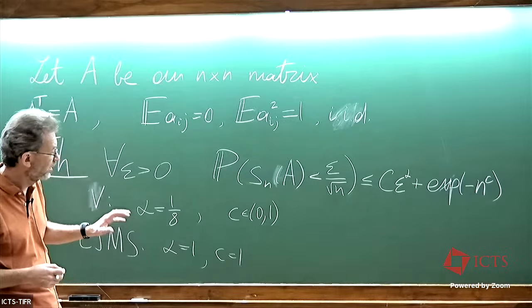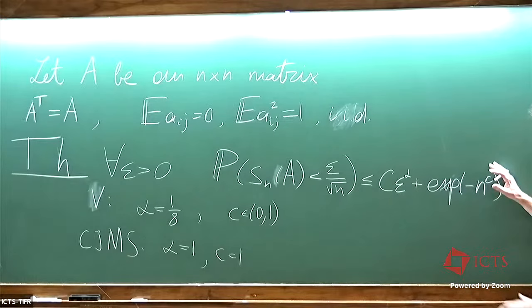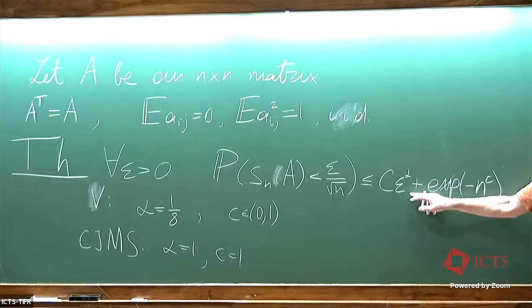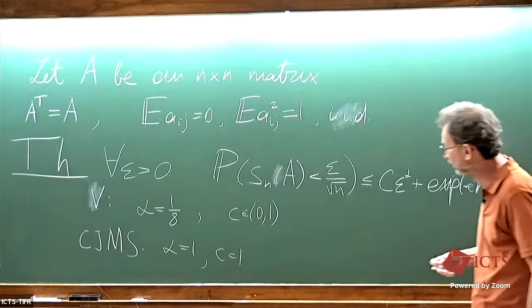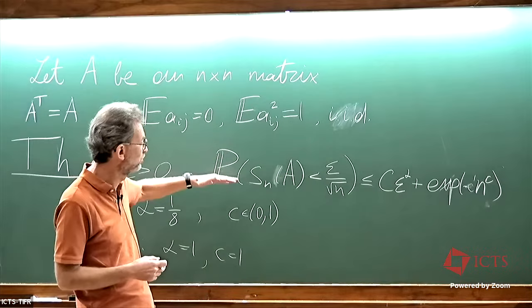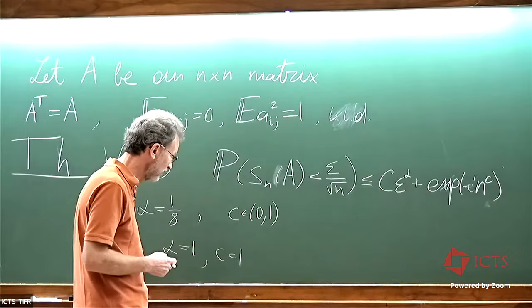This is also optimal. If we ignore the additive term, alpha equals 1 is the behavior of the Gaussian symmetric matrix, and exponential of negative C' n is the behavior of the Bernoulli random matrix — the probability that two rows are equal is 2 to the negative n. So for a general matrix, we have only two different types of behavior.